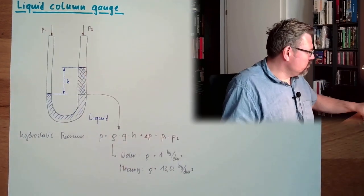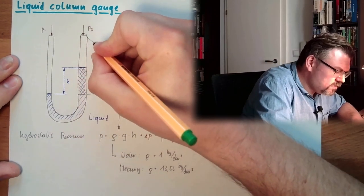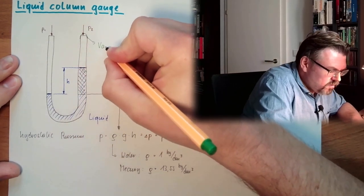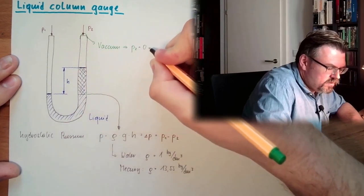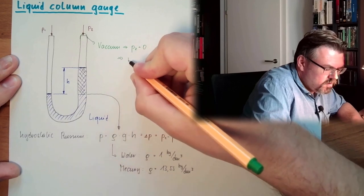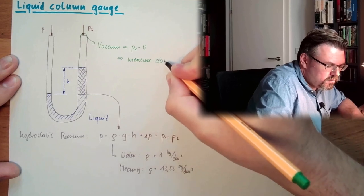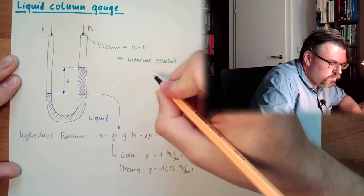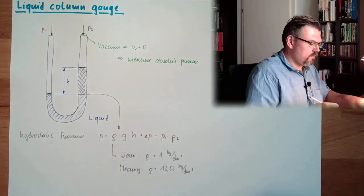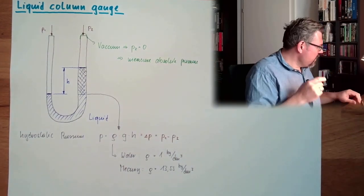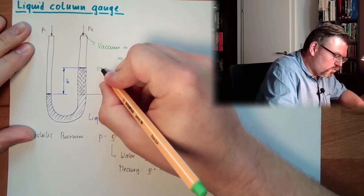And if we close this here, for instance, a vacuum is p2 equals zero, measure absolute pressure.